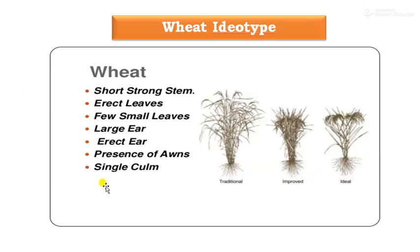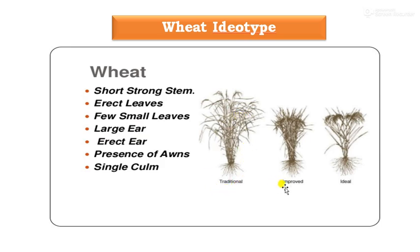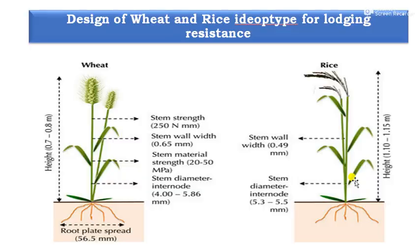The first example is wheat ideotype. In the case of wheat, there are different cultivars: the traditional or local cultivar, improved cultivars, and the ideal ideotype. During the Green Revolution period, particularly in wheat and rice, tall varieties were converted to dwarf ones because this provides resistance against lodging in cereal crops and also builds up the yield level. The important traits for the wheat ideotype are: short strong stem, erect leaves, few small leaves, large erect ear, and specific awn and curl characteristics.